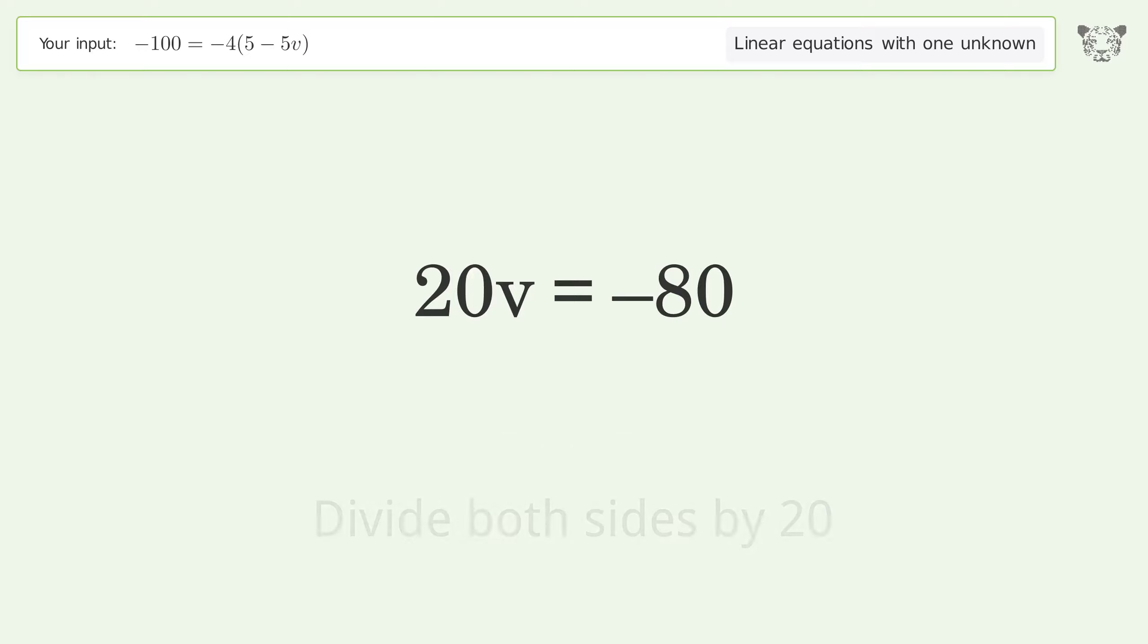Isolate the v. Divide both sides by 20. Simplify the fraction.